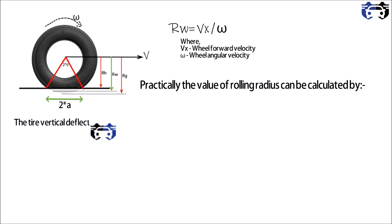Practically, the value of rolling radius can be calculated by the tire vertical deflection. The tire vertical deflection is Rg minus Rh, you can see in the figure. So we can write Rh equals to Rg into cos theta, and a equals to Rg into sin theta, where a is the half length of the contact patch. So this is our equation one.